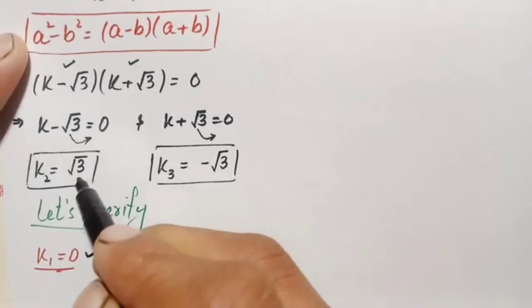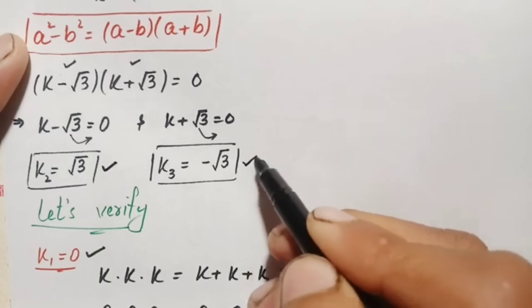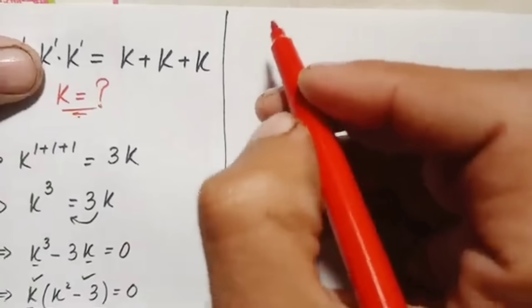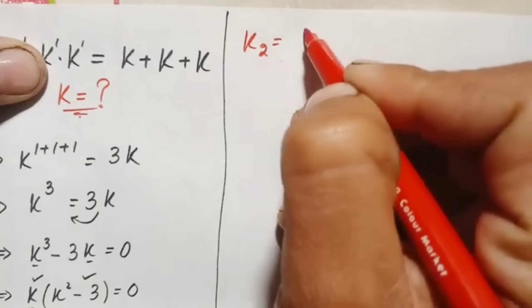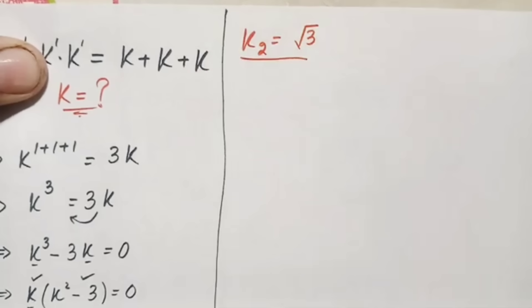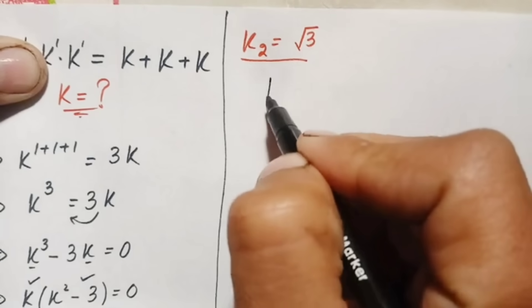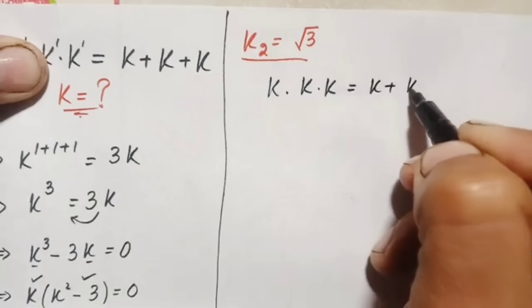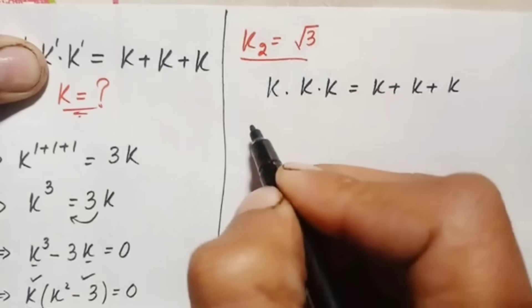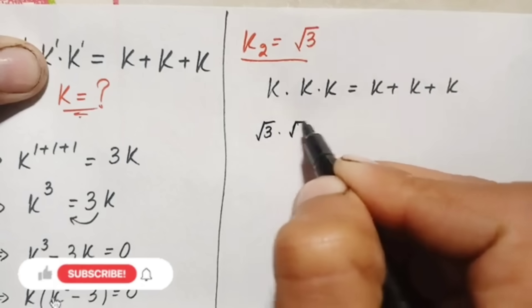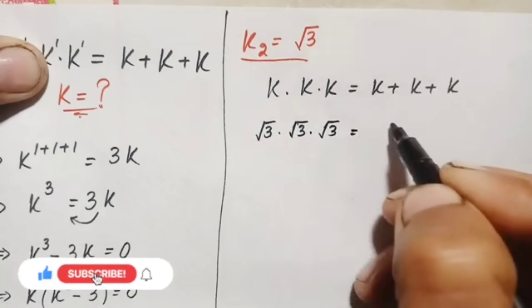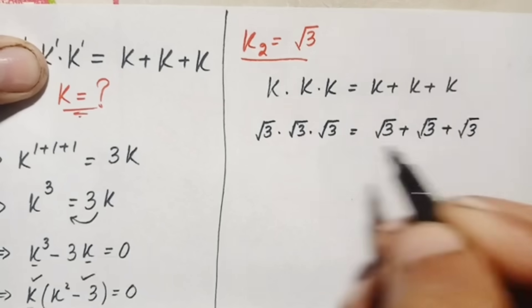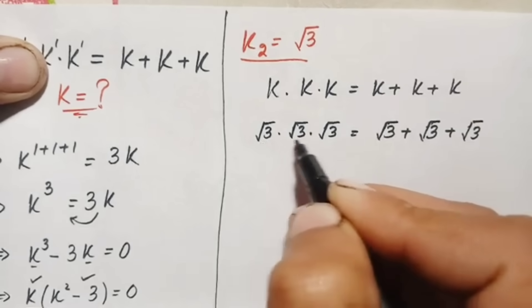Now let us verify k₂ equals positive √3. We write the problem: k times k times k equals k plus k plus k. Replacing k with √3: √3 times √3 times √3 equals √3 plus √3 plus √3.